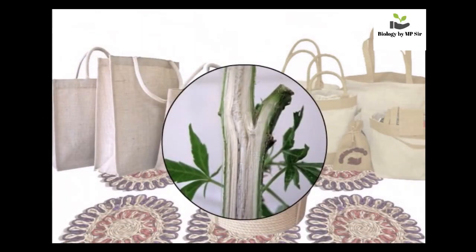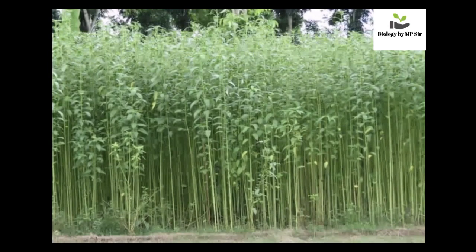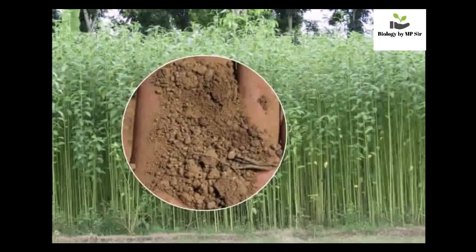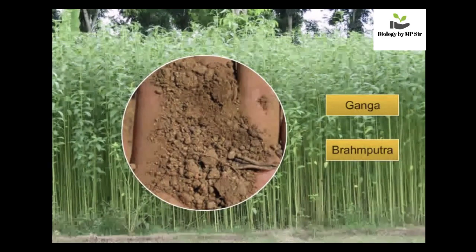Jute fiber is obtained from the stem bark of the jute or patsan plant. The jute plant is about 2.5 to 3.5 meters in height. Jute is grown in alluvial soil in the delta region of the Ganga and Brahmaputra rivers.